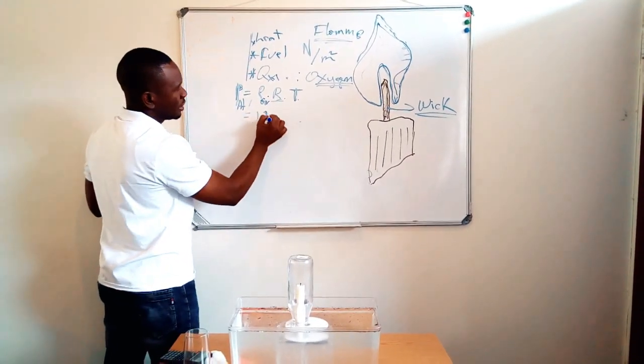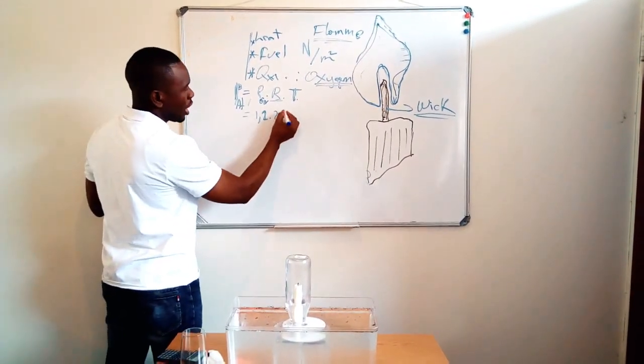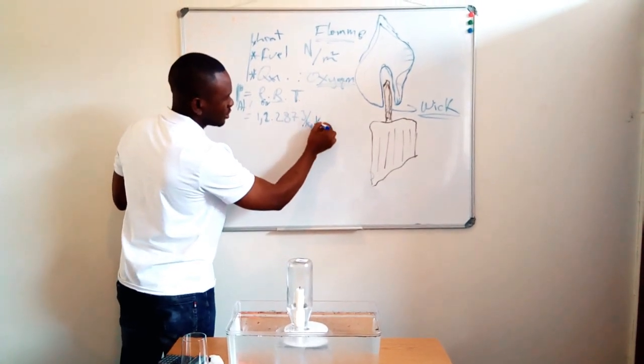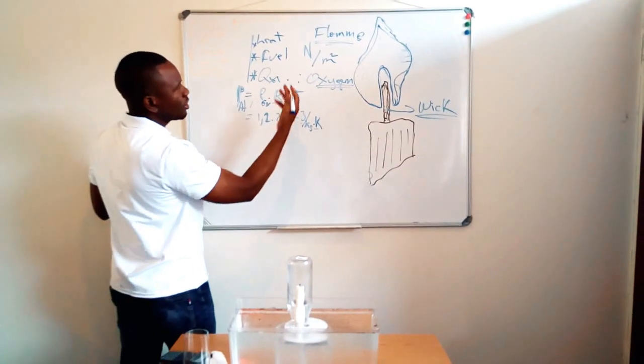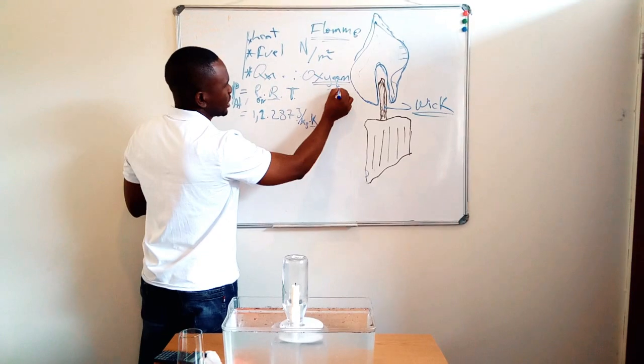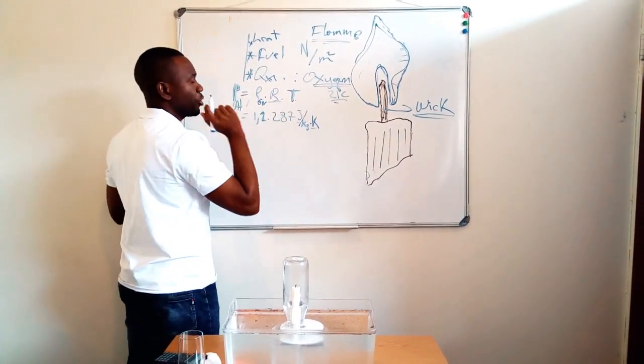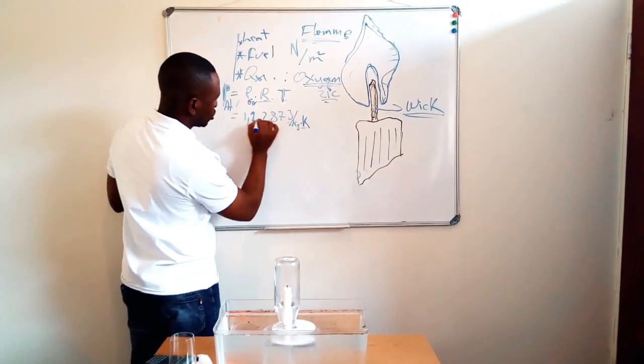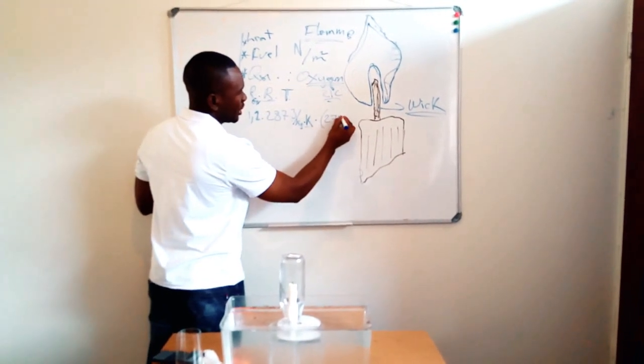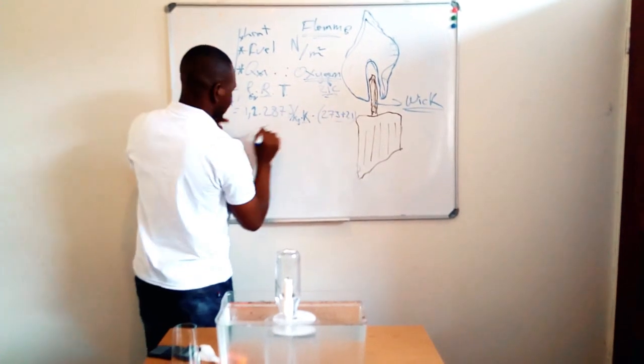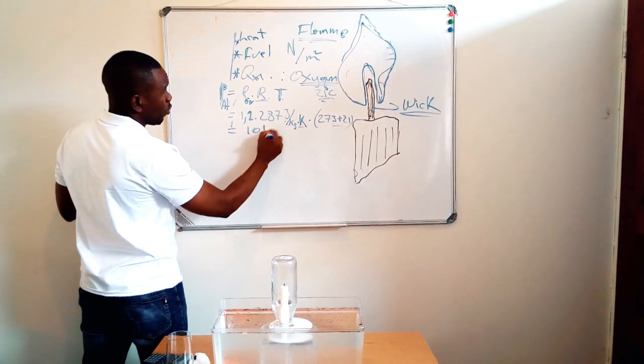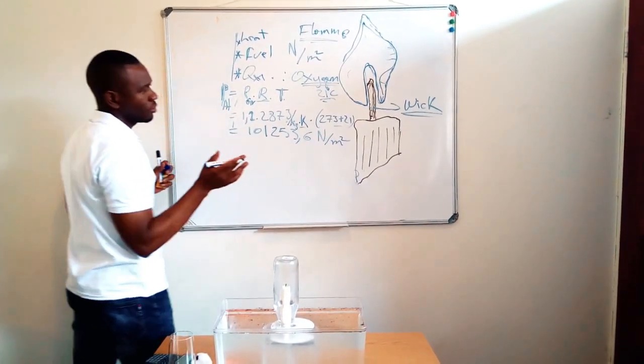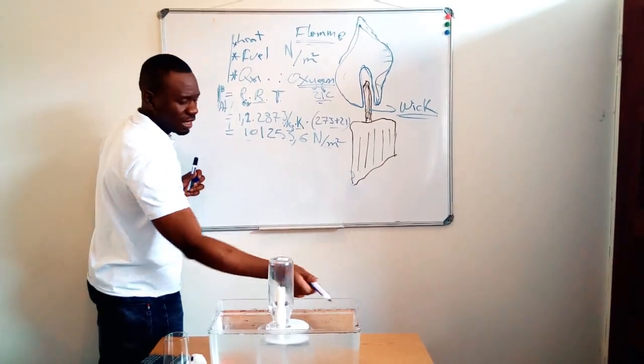And the specific constant of air is 287 joules per kilogram times Kelvin—the units of absolute temperature. And let's consider this place here has a temperature of 21 degrees Celsius. You have to know that temperature and pressure vary according to the altitude, according to the height, higher or lower, whatever, but this is not what we will talk about today. So this multiplied by the absolute pressure which is 273 plus our 21, so this is going to be in Kelvin. After multiplying this, we get 101,253.6 newtons per meter squared. All right, so this is the pressure that we have in here. This is our atmospheric pressure.